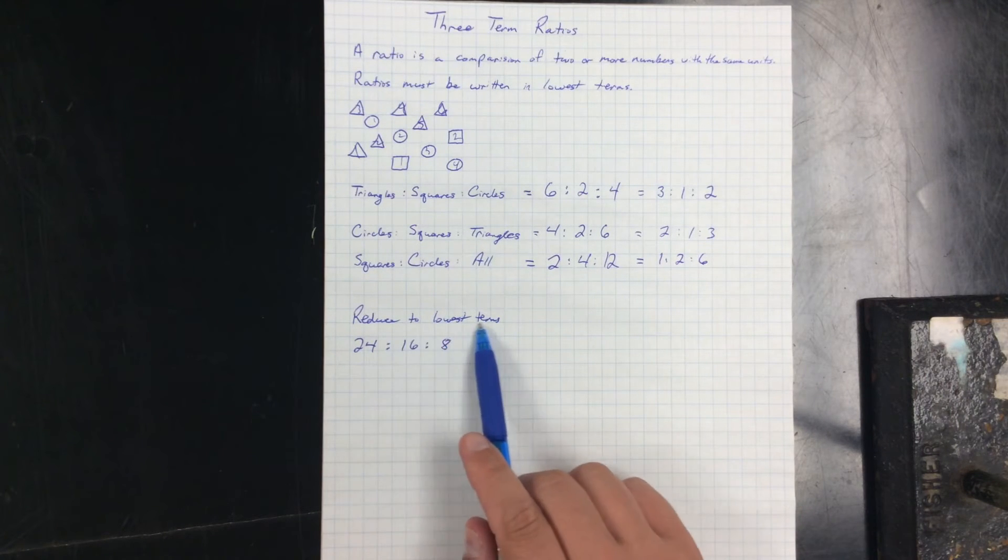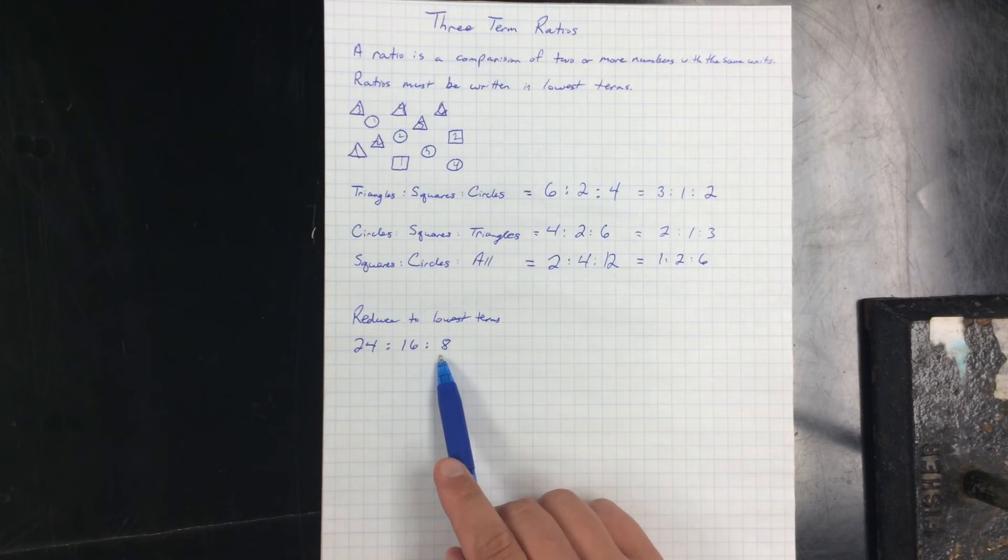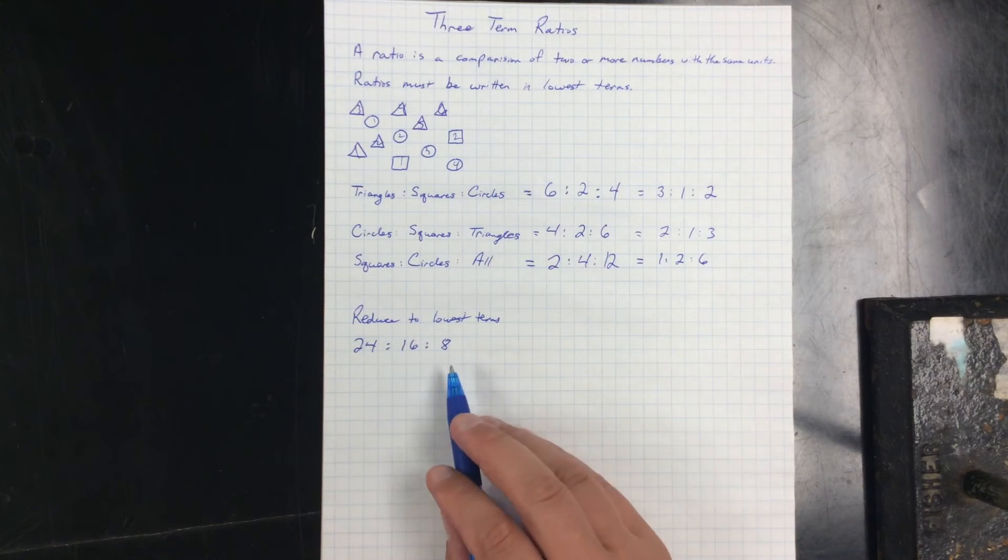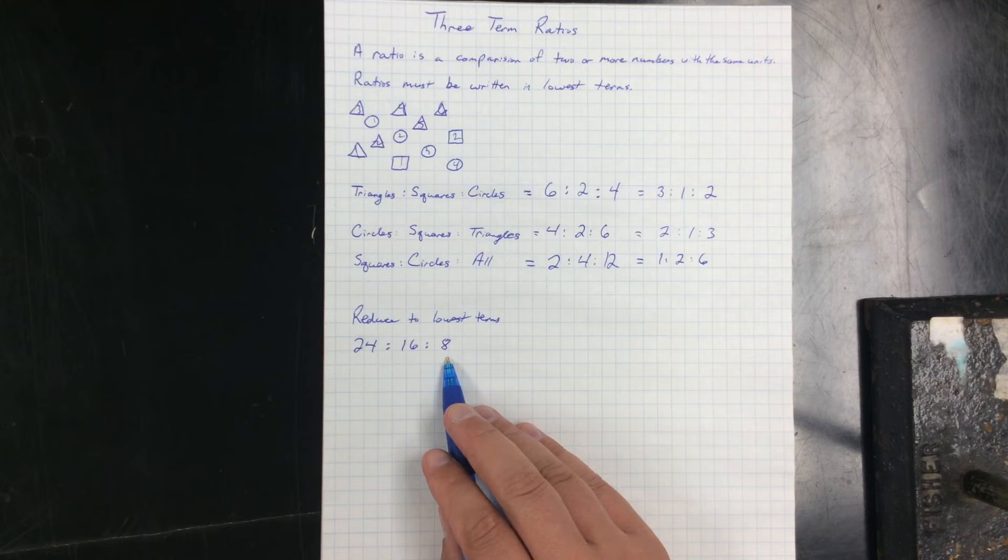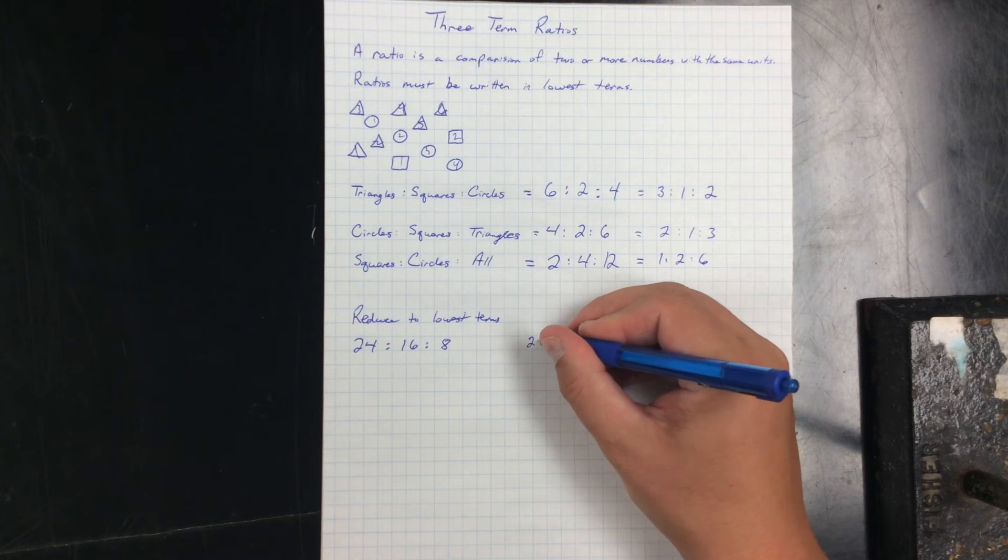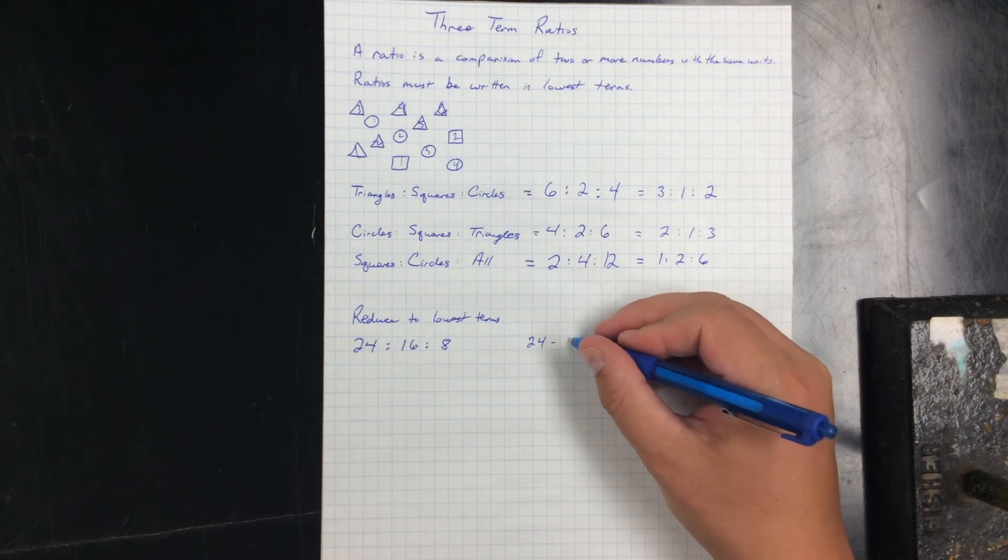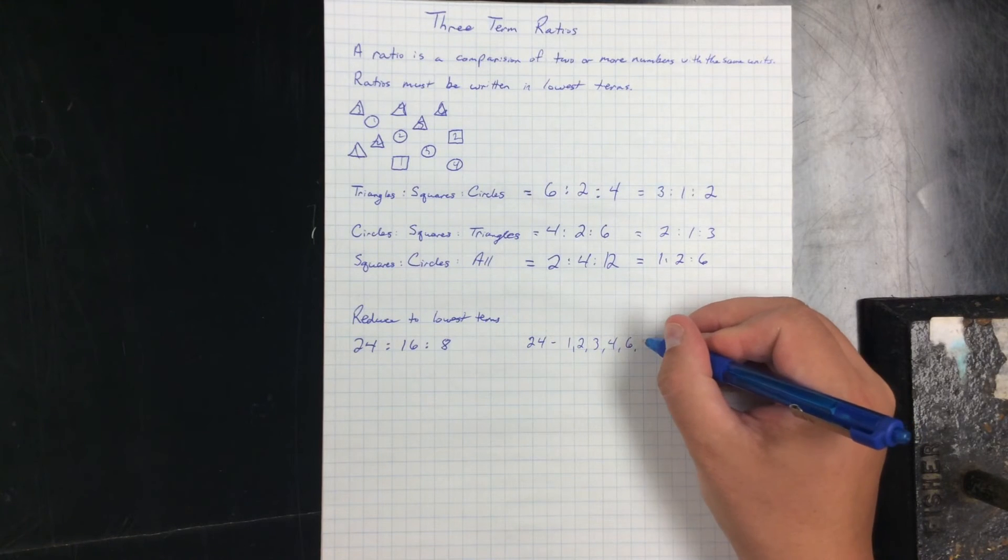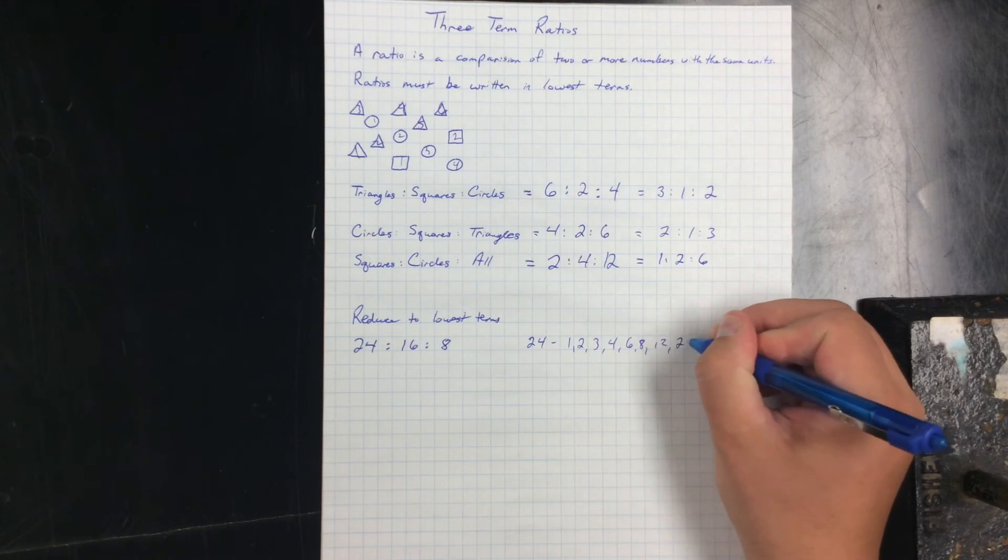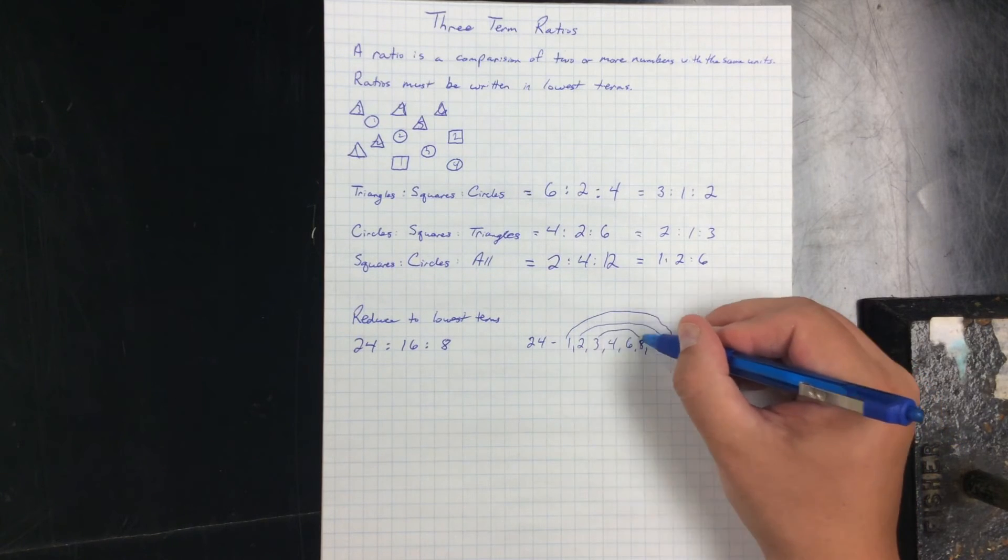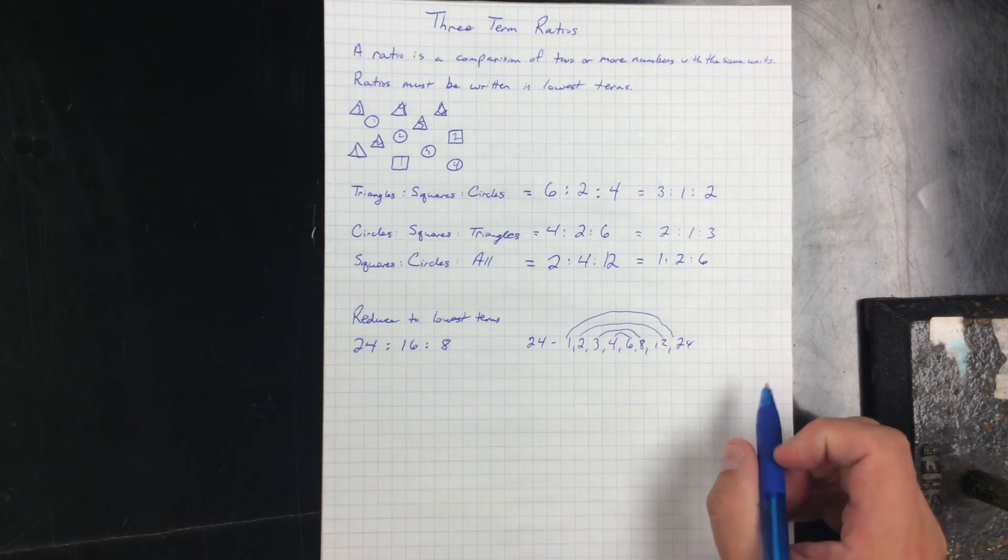My thought process for reducing to lowest terms for something like 24 to 16 to 8 would be, what number divides into all evenly? In other words, what are the factors of each? I could use my rainbow method and find all the factors of 24: one, two, three, four, six, eight, twelve, and twenty-four. Let me check that I got them all. One and twenty-four, two and twelve, three and eight, four and six. It looks like I got them all.